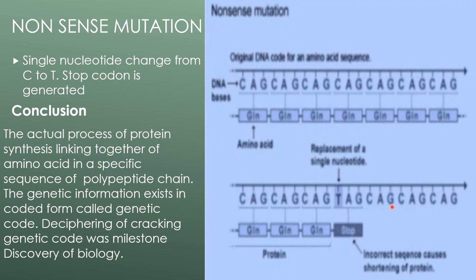In conclusion, the actual process of protein synthesis involves the linking together of amino acids in a specific sequence to form a polypeptide chain. The genetic information exists in coded form called the genetic code. Deciphering or cracking the genetic code was a milestone discovery in biology.